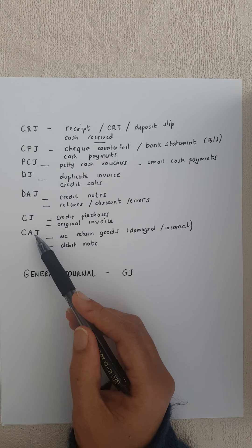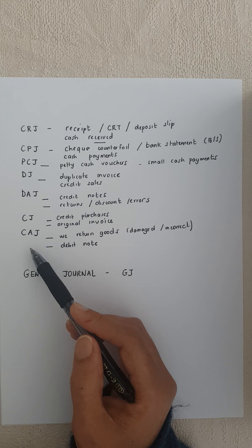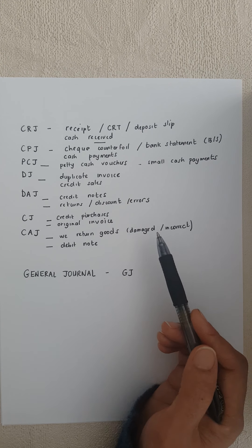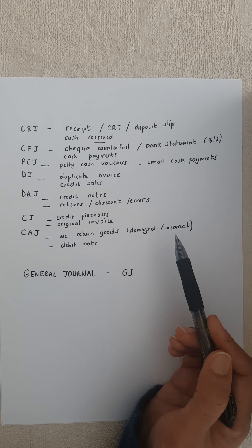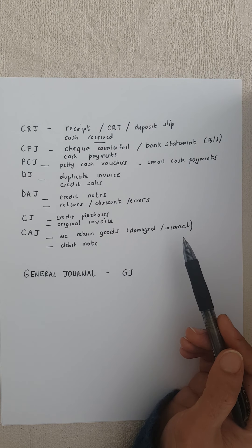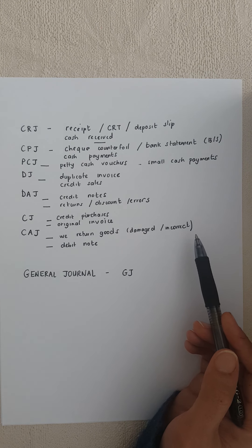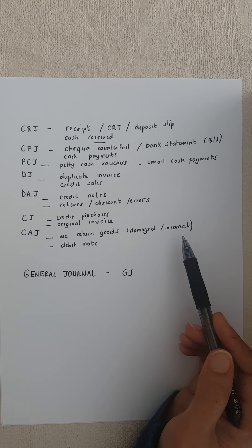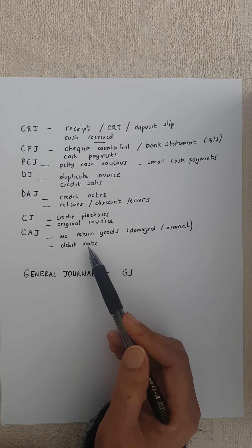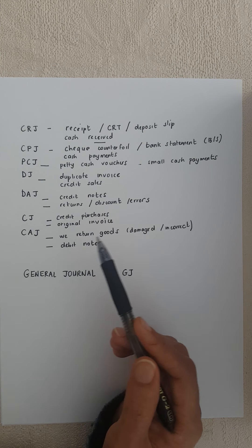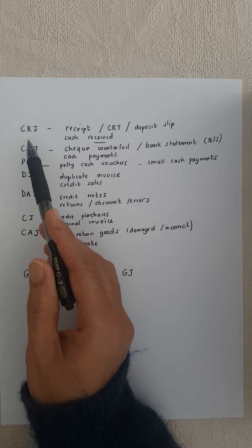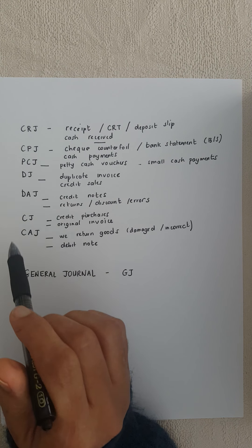Then we have a creditors allowance journal. We are returning some goods we're unhappy with — either they are damaged, broken, the invoice is incorrect, or they haven't given us a discount. So we issue a debit note for those goods and return them back to the creditor.